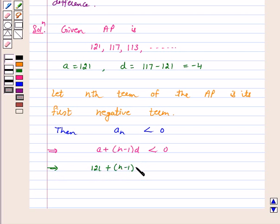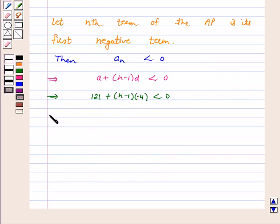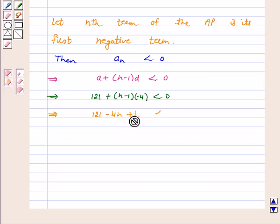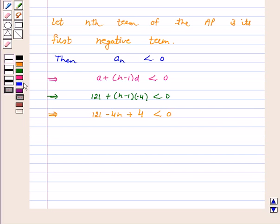d is -4 is less than 0. This implies 121 - 4n + 4 is less than 0. This implies 125 - 4n is less than 0 or 125 is less than